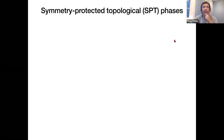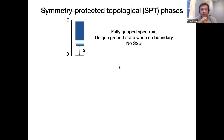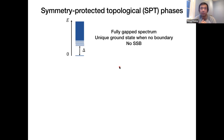Now let me define what a symmetry-protected topological phase is. This is a particularly simple class of disordered phases. To define this class, we require first that there is a gap to all excitations — all excitations are separated from the ground state by some energy gap. And somewhat technically, we require a unique single ground state when there's no boundary. These conditions guarantee that there's no symmetry breaking of any kind; it's guaranteed to be disordered or symmetric.